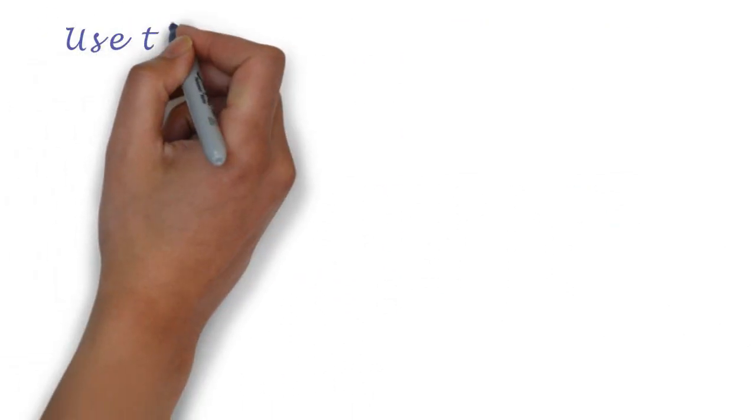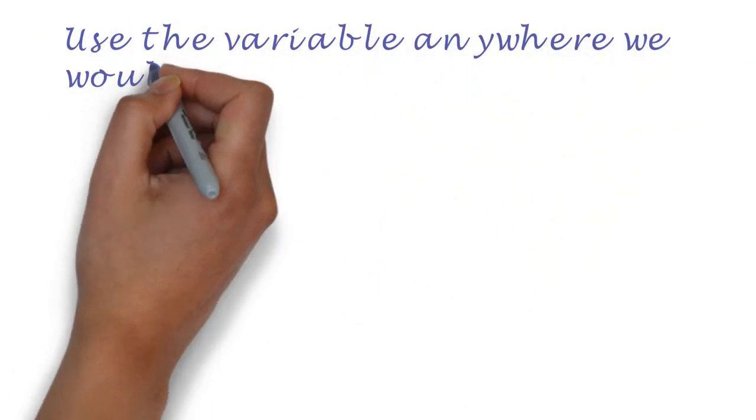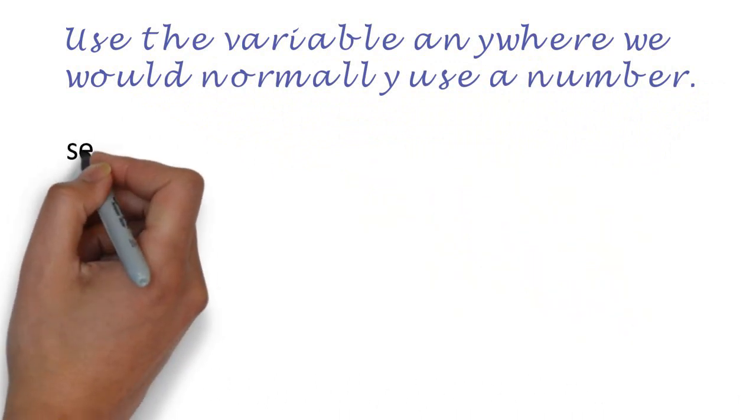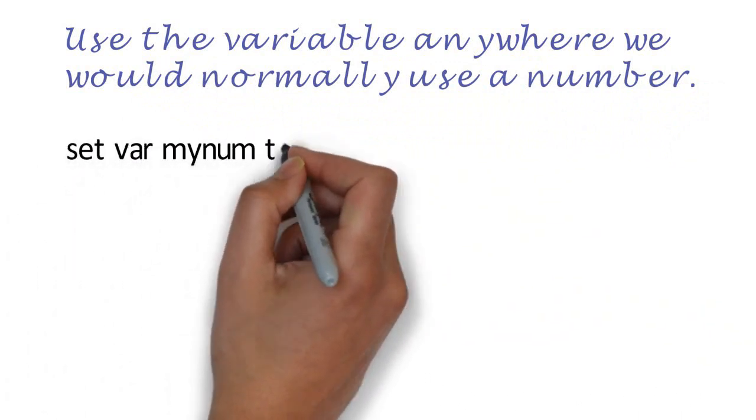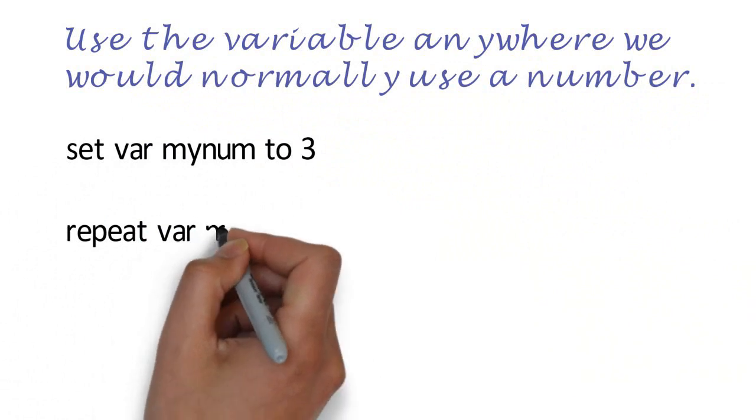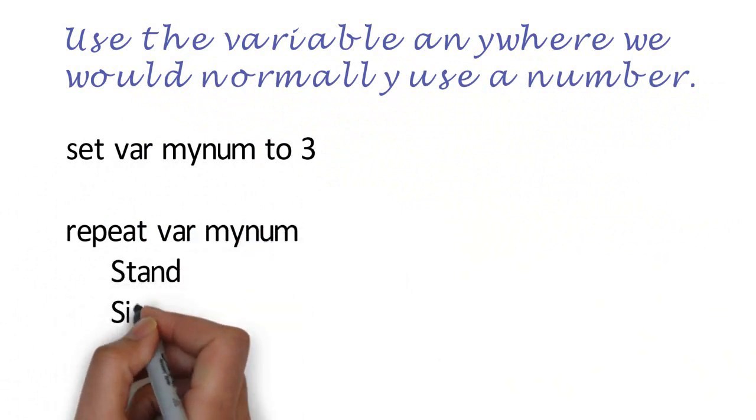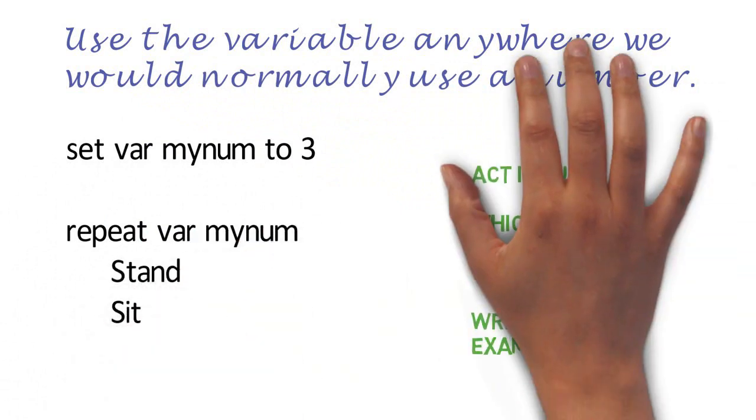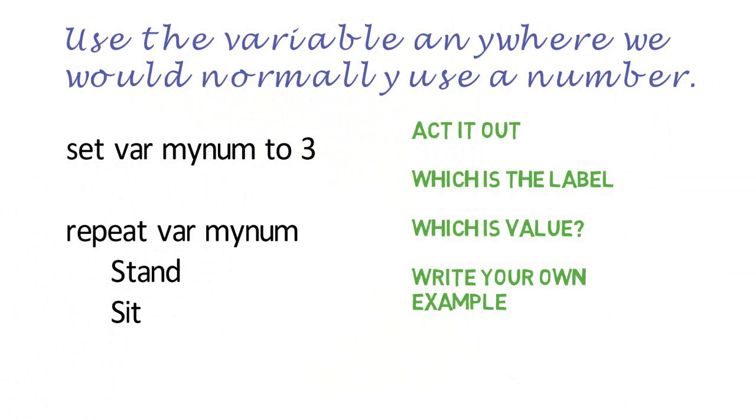Once we assign a number to a variable we can use anywhere we would normally use a number. Can you act out this everyday algorithm? Which part is the label and which is the value? Can you write your own example that uses variable my number?